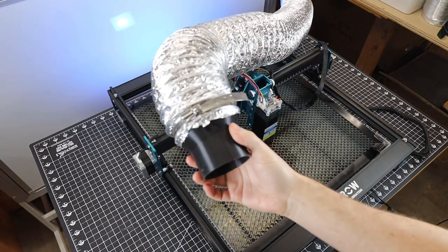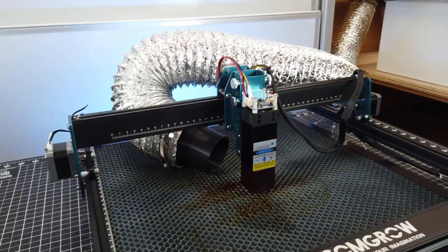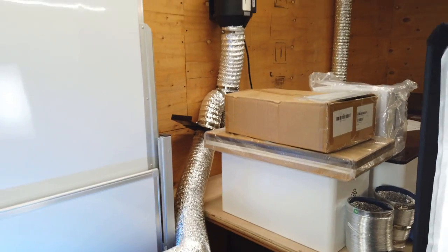You're also going to need some sort of ventilation setup. Seeing that cutting and engraving makes a ton of smoke and you don't want to be breathing that in. And my setup is pretty simple. It's just some tubing and fans to get everything out the window.